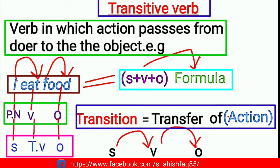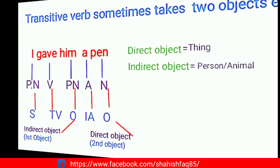English grammar can be easy to learn. In terms of transitive verbs, the subject performs the action and the object receives it. The sentence needs to make complete sense — around 90% to 95% complete sense. For example, 'I eat food' is complete, but 'I eat' alone creates confusion.